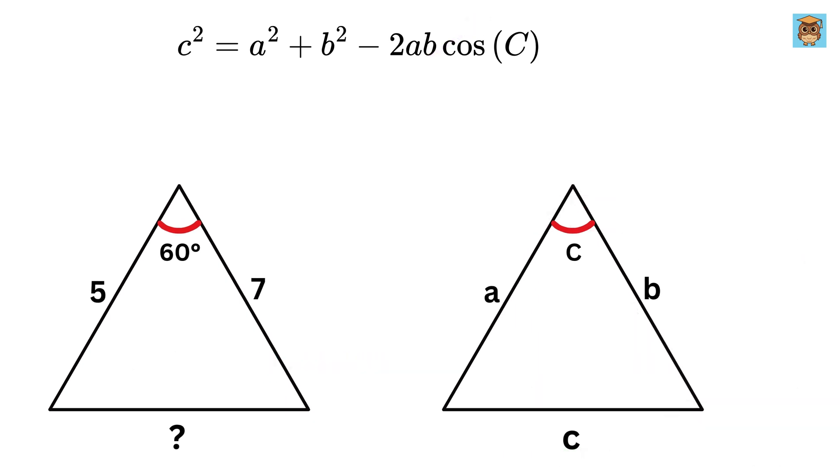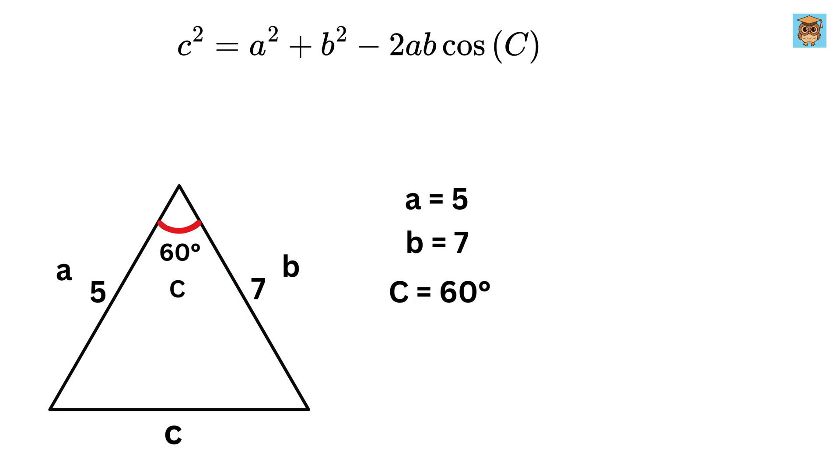Now let us solve this problem and find the value of this third side of this triangle given this is 5, this is 7, and this angle is 60 degrees. Let us label this side as A, this side as B, and this side as C. Also, let us label this angle as C, so we have A equals 5, B equals 7, and angle C equals 60 degrees.